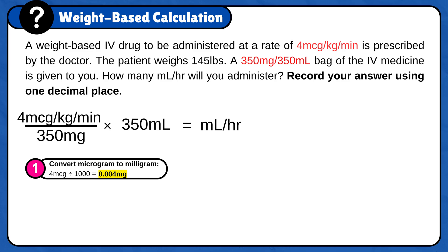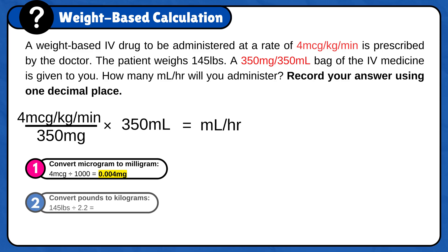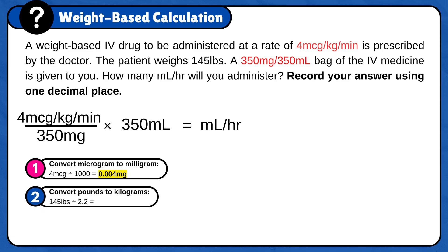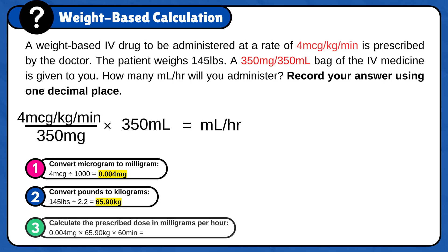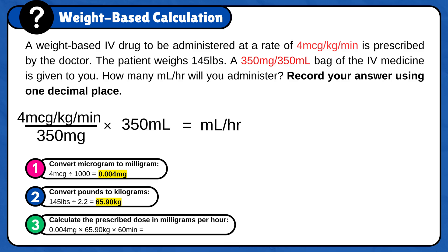Now convert pounds to kilograms: 145 pounds divided by 2.2 is 65.90 kilograms. Finally, calculate the prescribed dose in milligrams per hour: 0.004 milligrams times 65.90 kilograms times 60 minutes is 15.81 milligrams per hour.